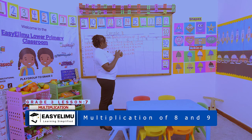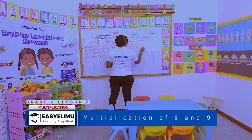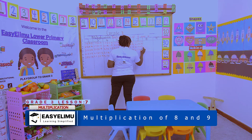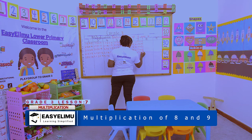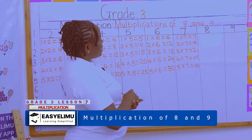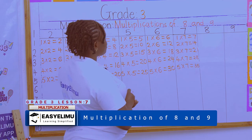4 × 7 is 21 + 7 = 28. 5 × 7 is 28 + 7 = 35. Have you seen that? We are moving on well.